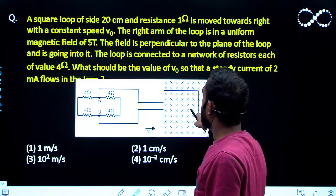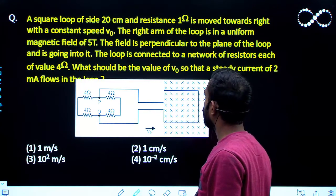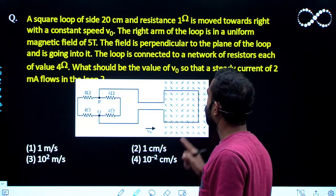The right arm of the loop is in the uniform magnetic field of 5 tesla. The field is perpendicular to the plane of the loop and is going into it.